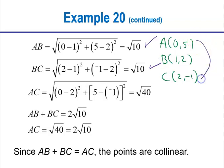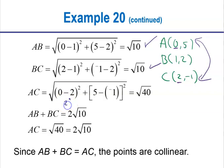And checking AC: they said (0−2)² plus (5−(−1))². That's correct — 0 minus 2 is 2 squared; 5 minus negative 1 is actually 6 squared — that's 36. So 4 plus 36 is 40, giving AC = √40. This one doesn't have an error.